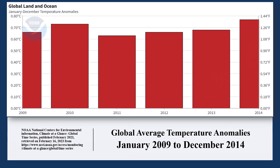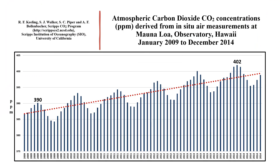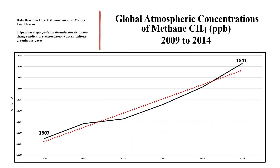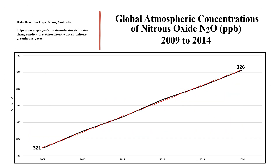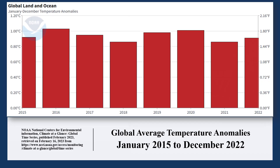For the six years 2009 to 2014, the global temperature trend was positive. So too was the trend of carbon dioxide concentration, methane concentration, and the concentration of nitrous oxide. For the six years 2009 to 2014, the greenhouse gas hypothesis agrees with experience.